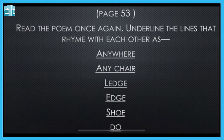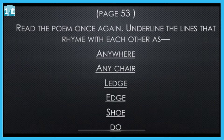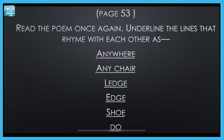Page number 53 — read the poem once again. Aapko poem ek aur baari padni hai. Underline the lines that rhyme with each other — joh ek dusre ke saath rhyme karti hai. Rhyming words are the sounds which sound similar. I have already marked and underlined a few words from the poem. For example: anywhere, any chair — that sounds quite similar. Again: ledge, edge, shoe, do — these are all rhyming words.